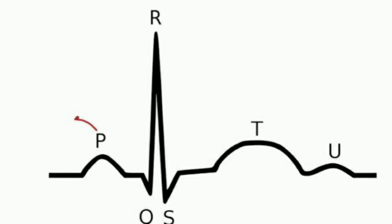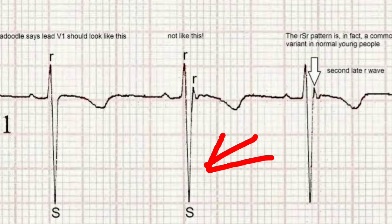Regarding why we have positive and negative deflections: when the wave of depolarization is moving towards a particular electrode or lead, that lead records the electrical activity as a positive deflection. When the wave of depolarization is moving away from the electrode or ECG lead, it is represented on the ECG paper as a negative deflection. This is one of the most important concepts for understanding the ECG.